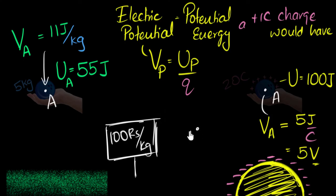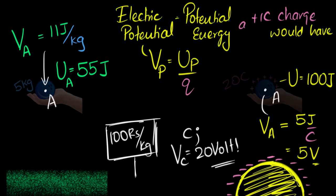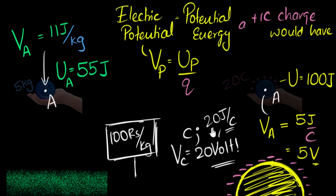We can now go back to our original question. If somebody says that the potential at some point C is 20 volts, what does that mean? First, remember: volt is joules per coulomb. So 20 volts means 20 joules per coulomb. It means if you keep one coulomb of charge at that point, it would have 20 joules of potential energy. And since it's an indicator: keep 10 coulombs there and it would have 200 joules of potential energy. Potentials are just indicators we can assign to any point in space.